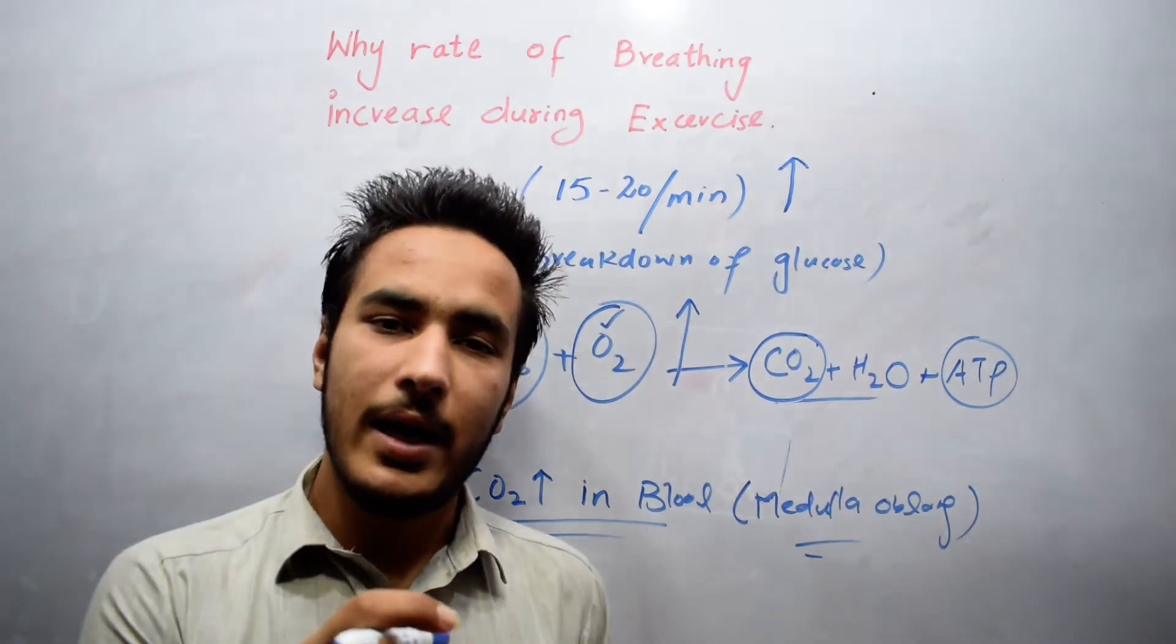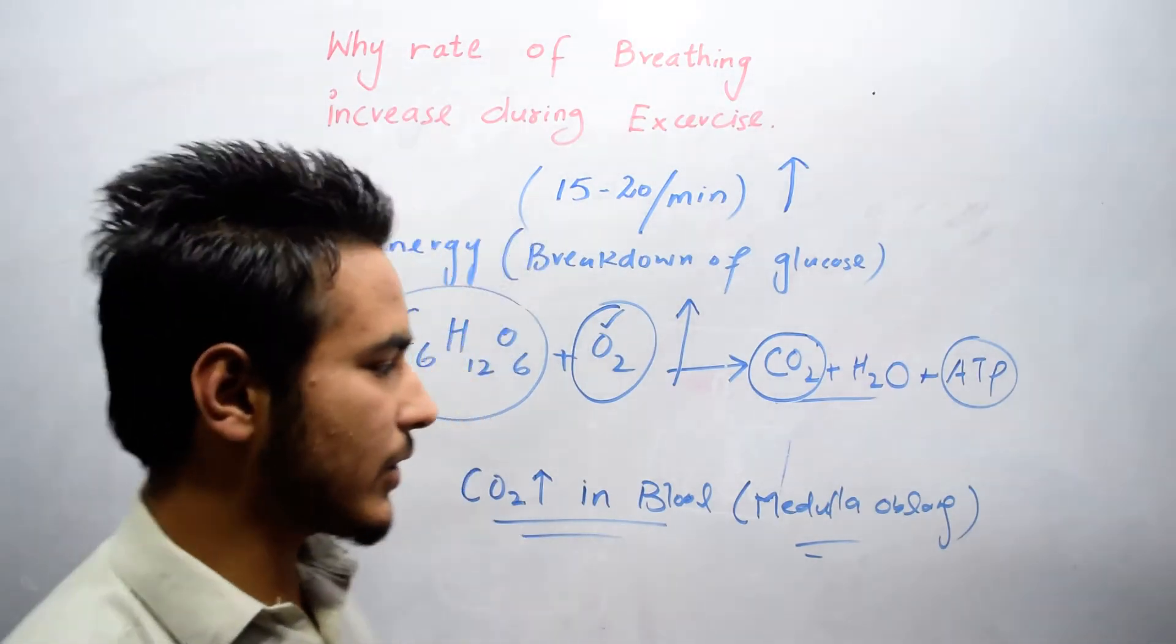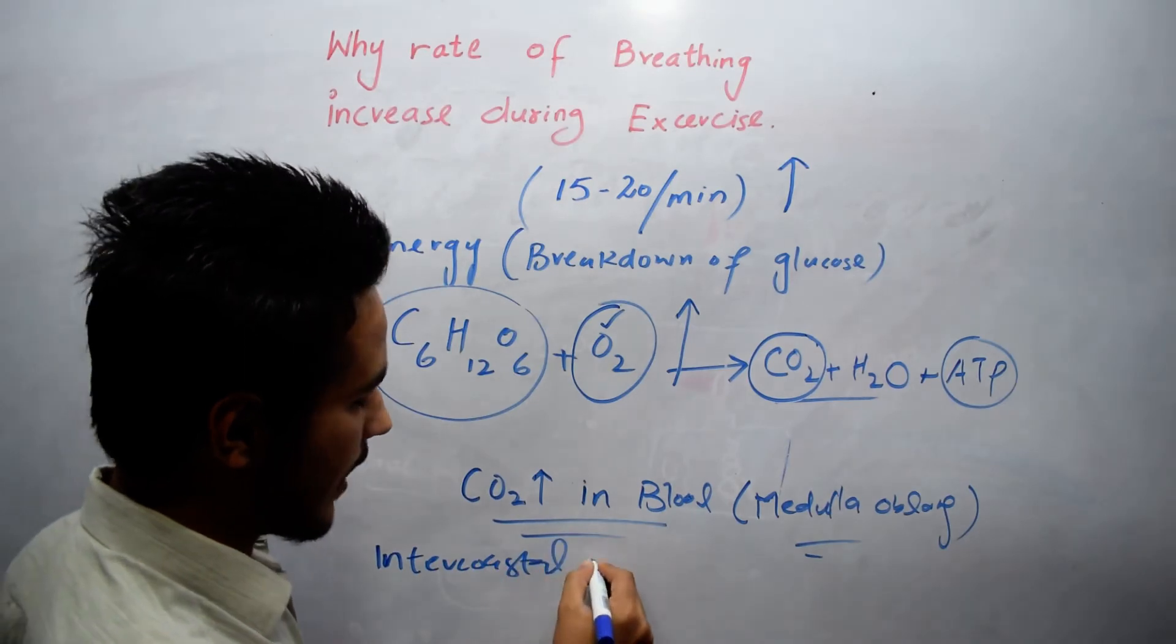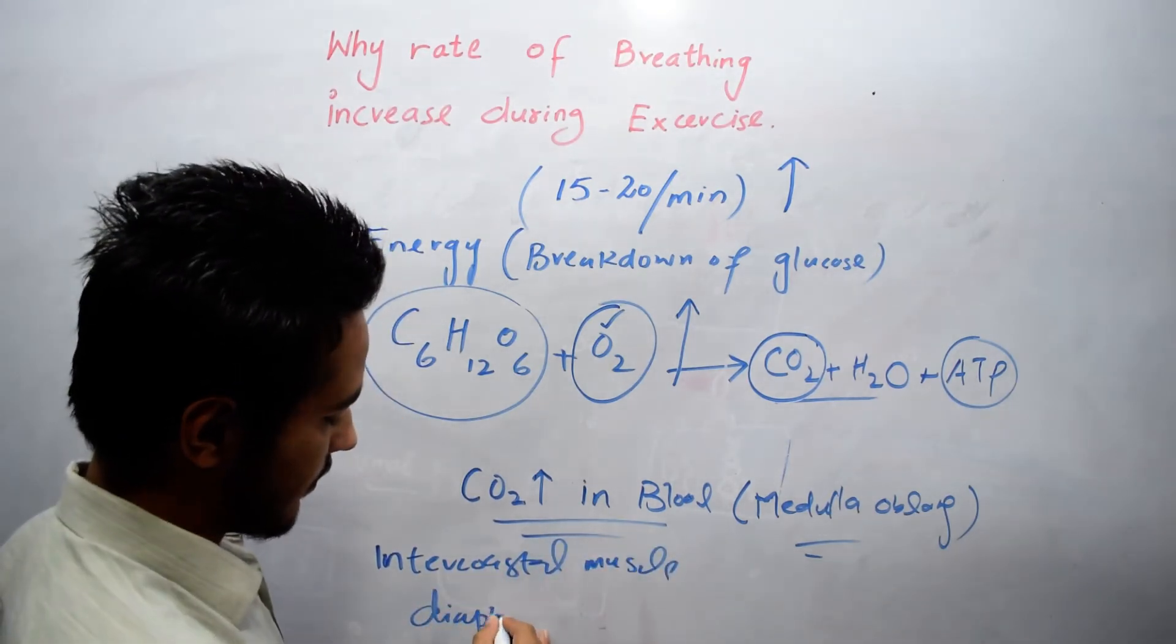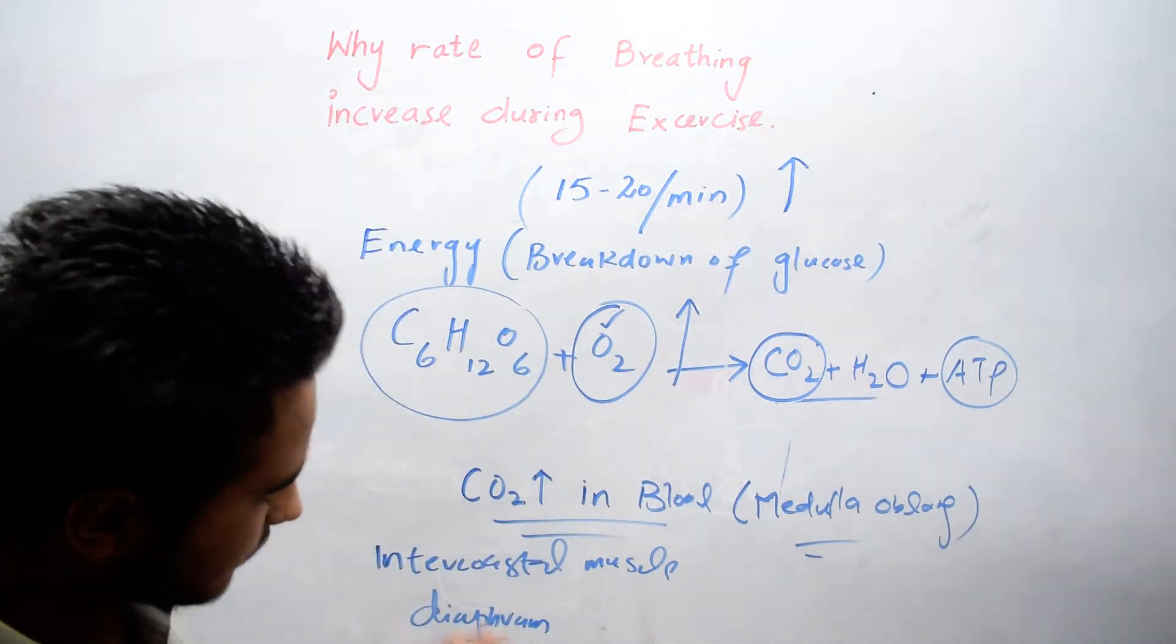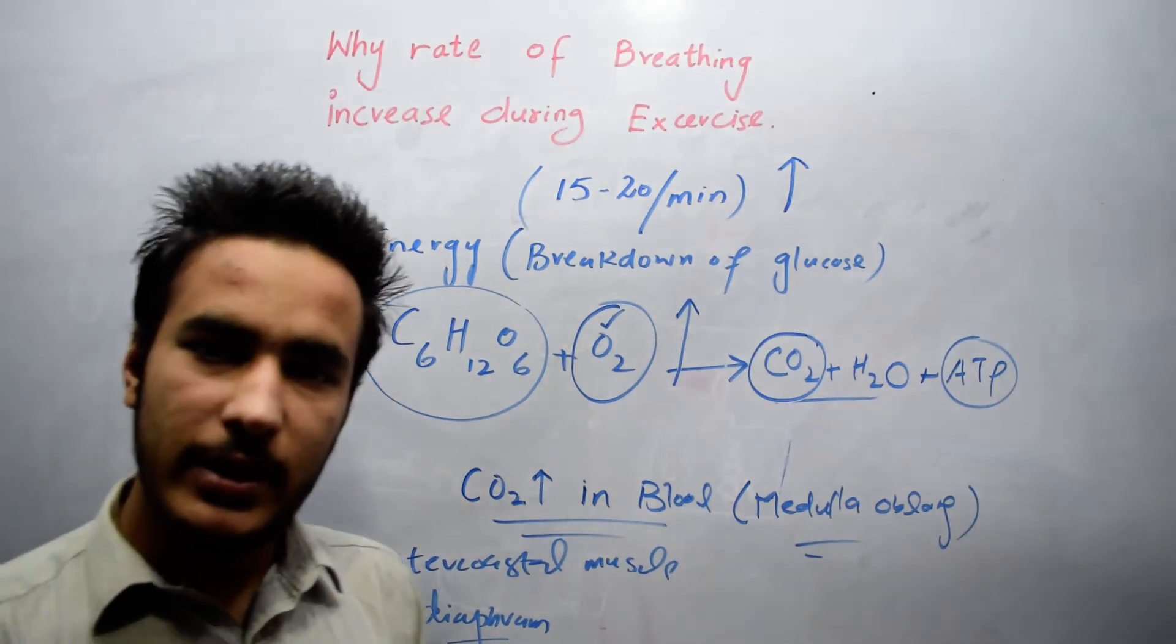the medulla oblongata will send messages to the diaphragm and intercostal muscles of the ribs. They will send the message to increase the rate of breathing.